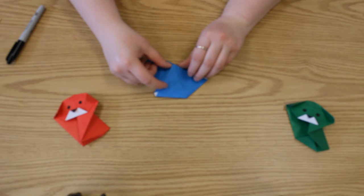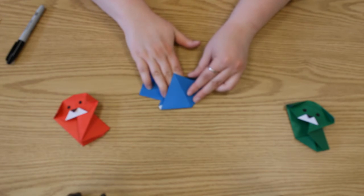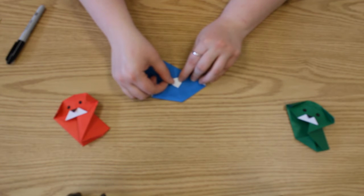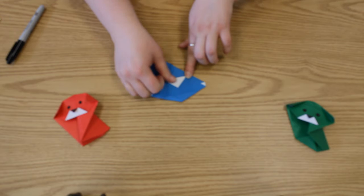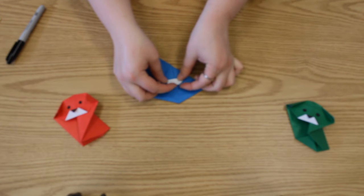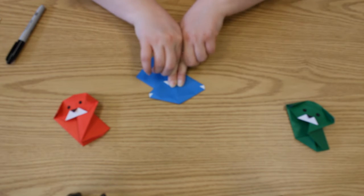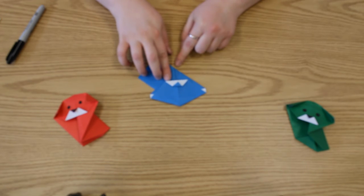So we're going to take this corner right here. There's a little flap. We're going to take the corner and turn it up just a little ways. And then we're going to take this corner again and turn it down a little ways. And there you have a little muzzle.